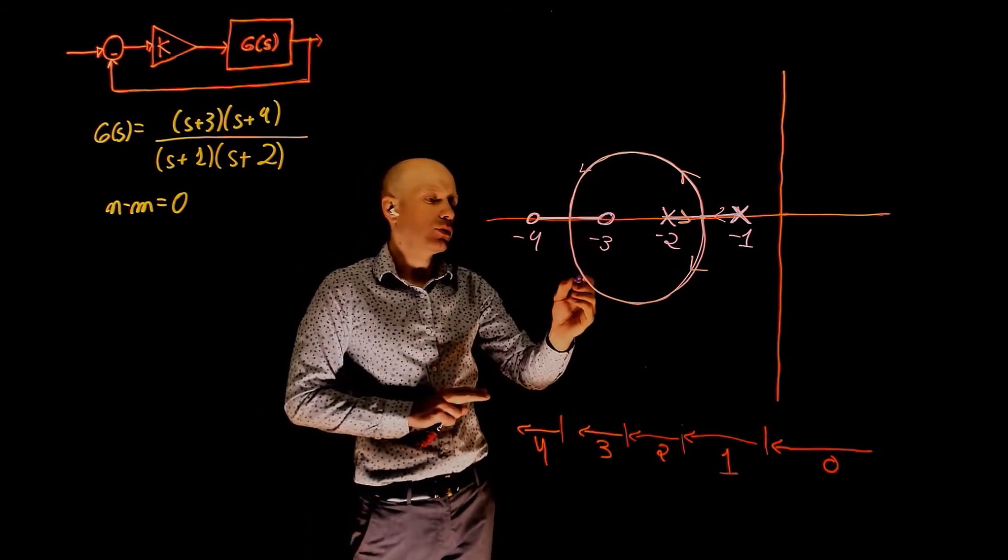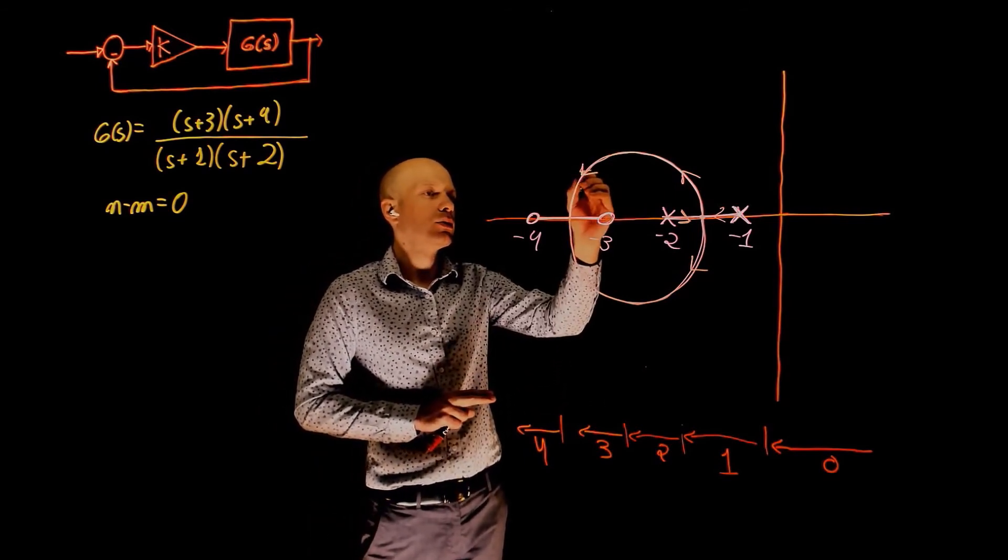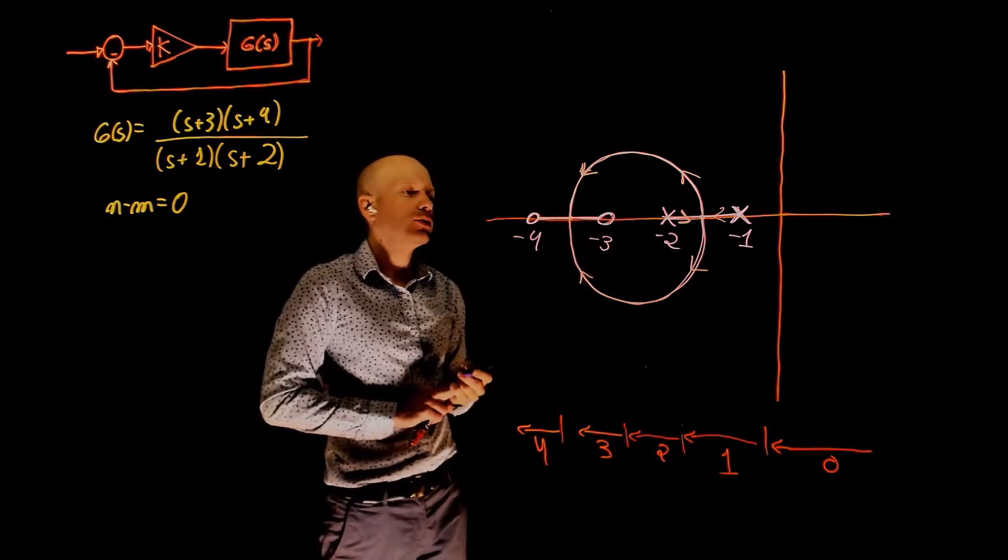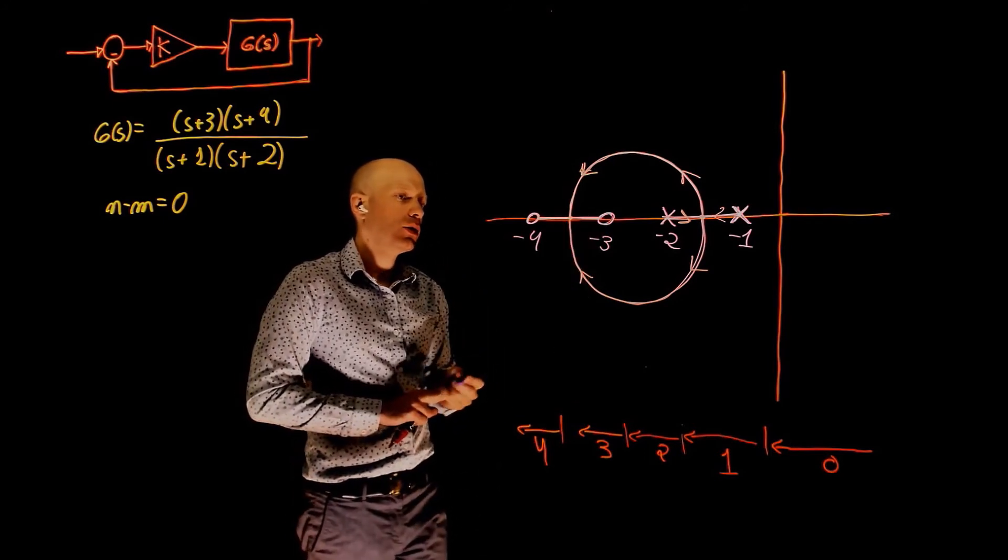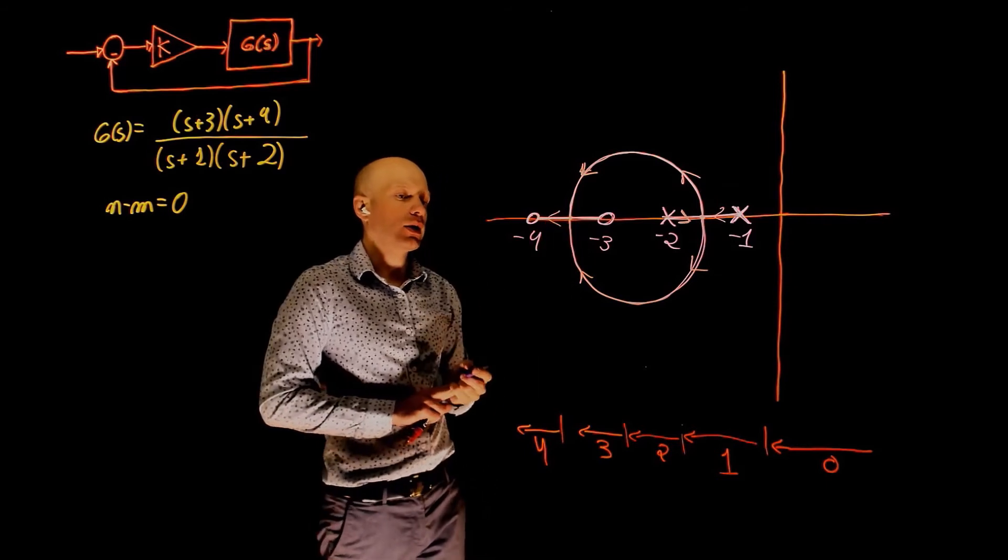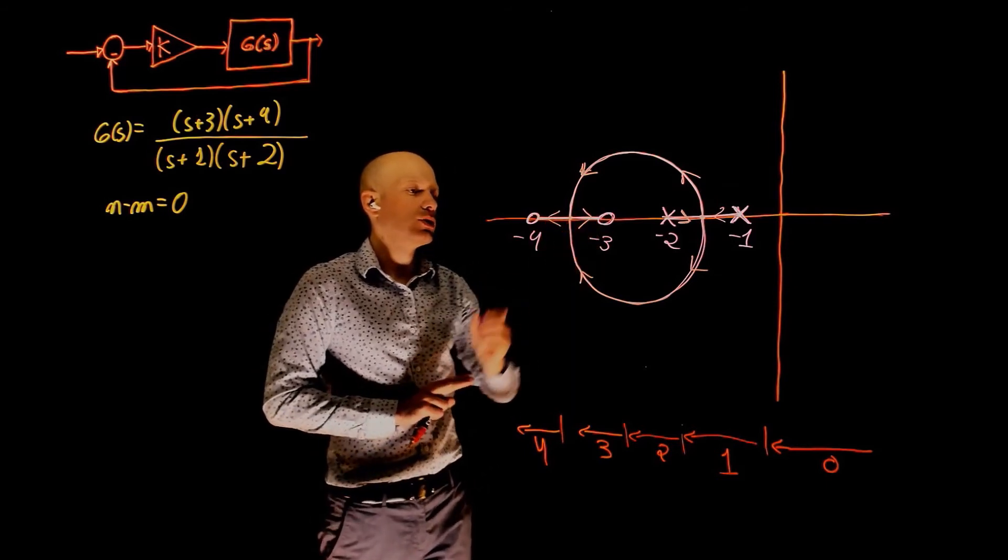They continue to go towards the zeros and break in back into the real axis at this point. One of them goes to the zero at negative 4, the other one goes to the zero at negative 3.